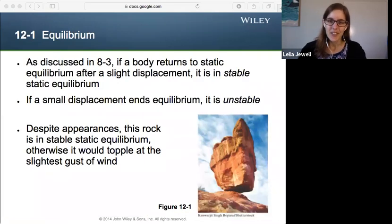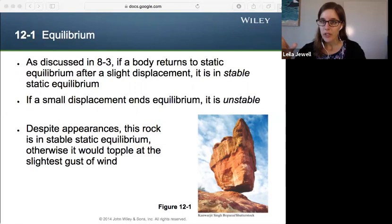All right. So we briefly discussed static equilibrium, or stable and unstable, back in Chapter 8, Section 3, where we said if a body returns back to equilibrium after being pushed slightly to one side, that's a stable static equilibrium. We talked about the marble inside a bowl. And then instead, if a small displacement ends the equilibrium, we call that unstable. We talked about a marble on top of a bowling ball. If you push it just a little, it's going to fall off.